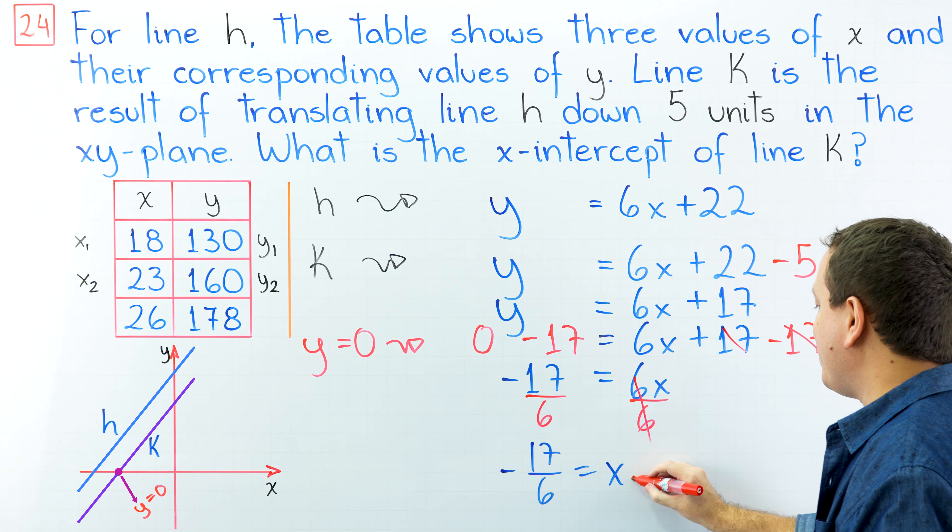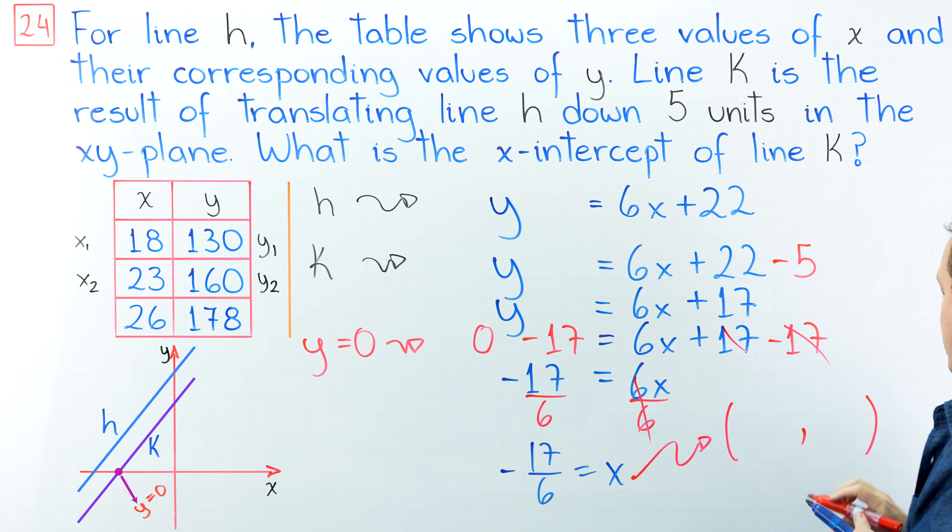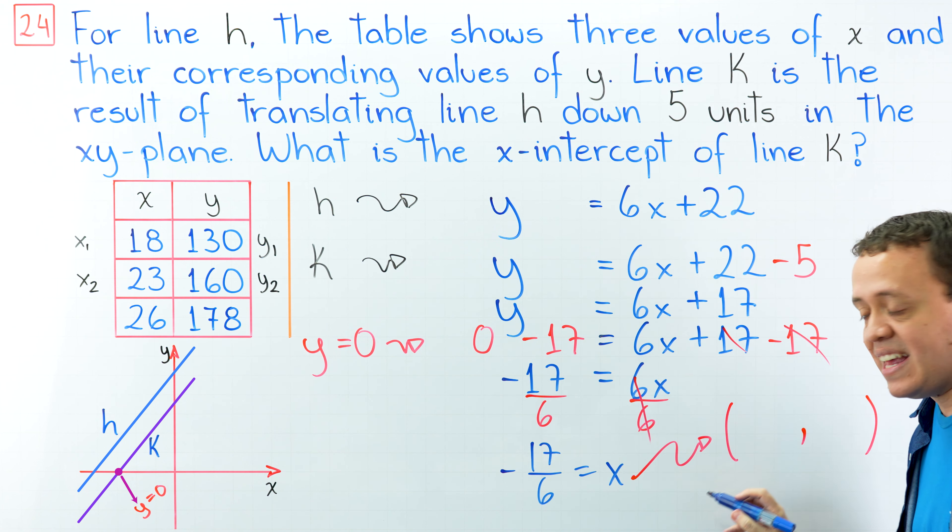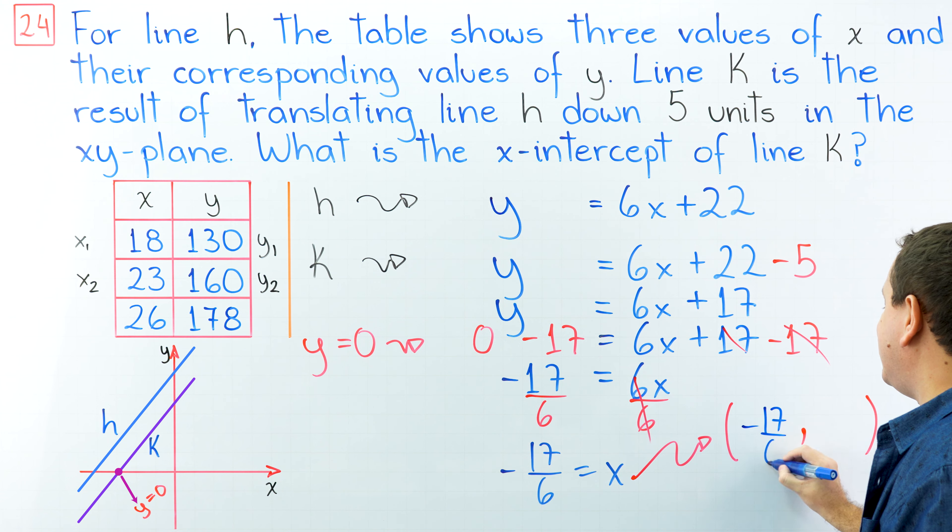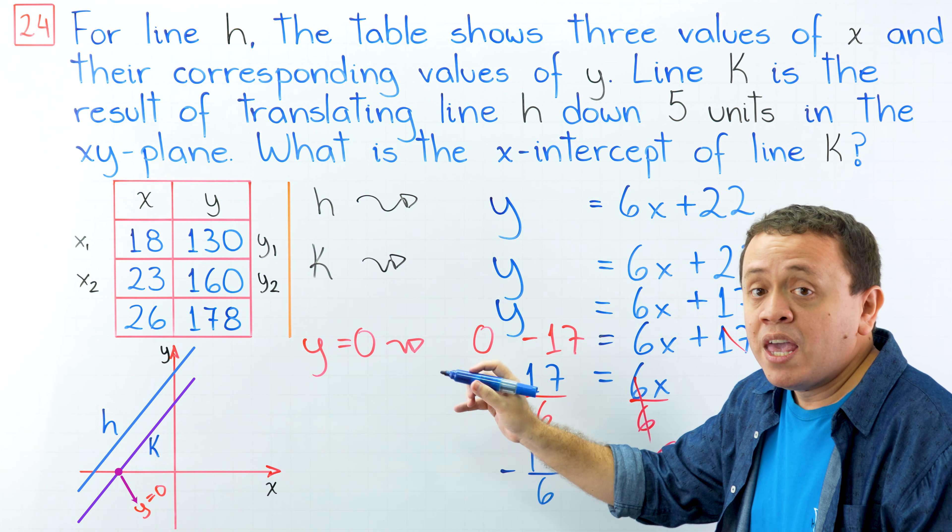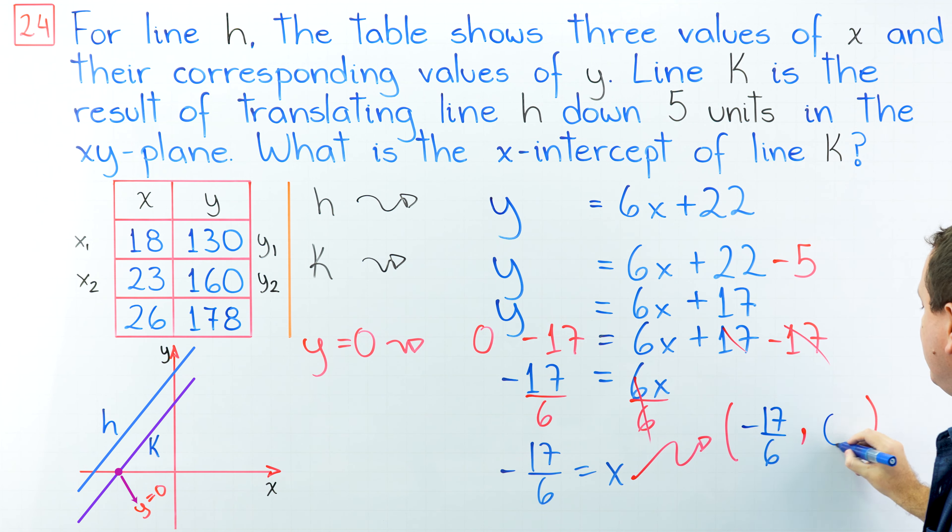And we're ready for the final answer. The final answer is an ordered pair. First, we're going to write the value of x. The x-coordinate is negative 17 over 6. And then comes the value of y. Never forget that at the x-intercept, the value of y is equal to 0. Our final answer is negative 17 over 6, 0.